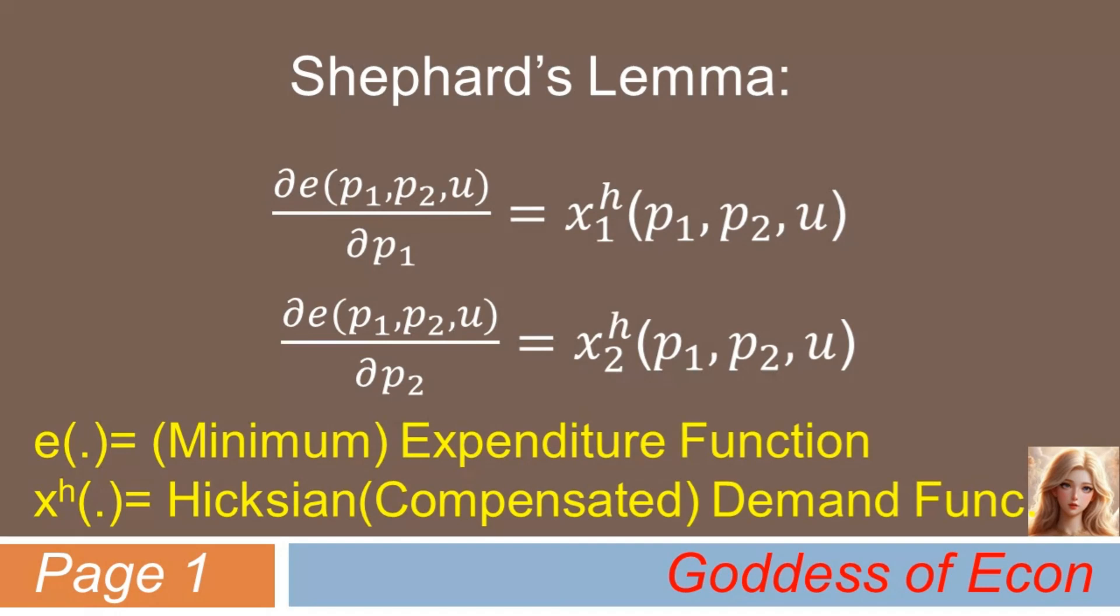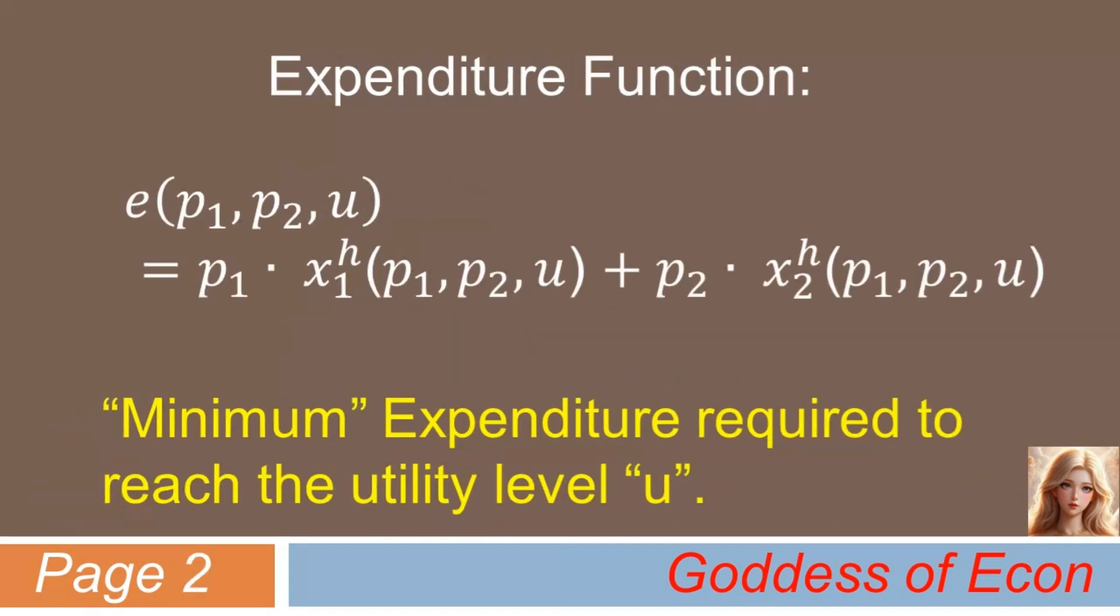Here is the definition. The expenditure function, sometimes known as the minimum or minimized expenditure function, is defined as the price of good 1 times the Hicksian demand for good 1 plus the price of good 2 times the Hicksian demand for good 2. This implies that the expenditure function always gives you the minimum expenditure that is required to reach the utility level of u, given goods prices p1 and p2. So, it is also called a minimum value function.